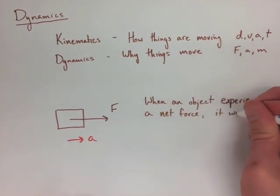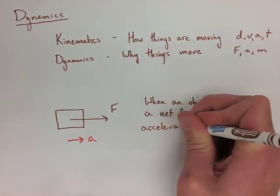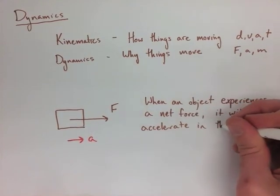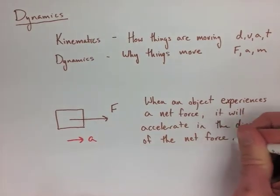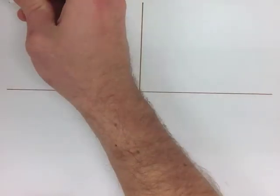This is known as our net force. When an object experiences a net force, it's going to accelerate in the direction the force is facing. Most objects have more than one force acting on them at one time though, and we'll look at that later.